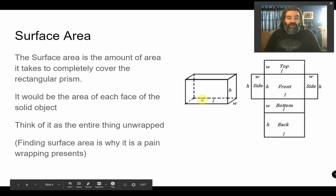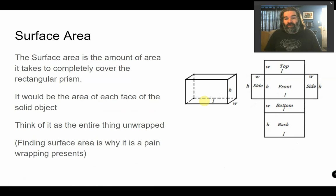So let's look at what surface area is. The surface area is the amount of area it takes to completely cover the prism. It would be the area of each face. Think of it as actually unwrapping the entire object. You'd get a front, but you'd also get a back that's the same size. You'd have a bottom and a top that is the same size, and then you'd have two sides that are the same size. You need to find out what is the area of this sheet of paper that you would need to actually fully wrap this object. That's what the surface area is.